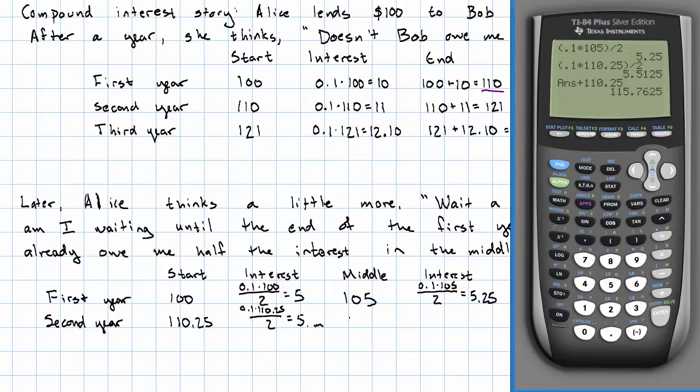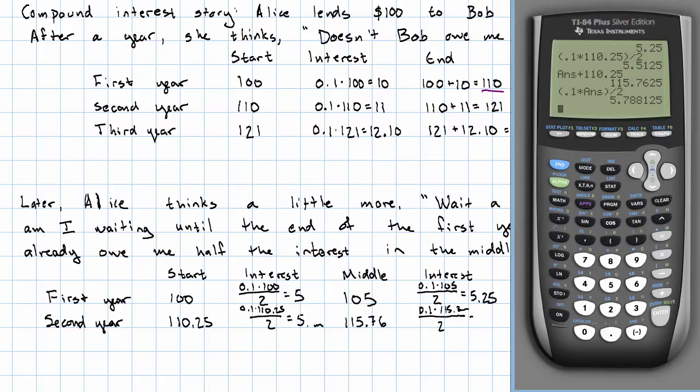In the middle of the second year, I'm going to write down that Bob owes $115.76. But I'm going to leave the entire number in my calculator and not round it. So $0.1 times that number in my calculator. That's 5.0 long decimal.